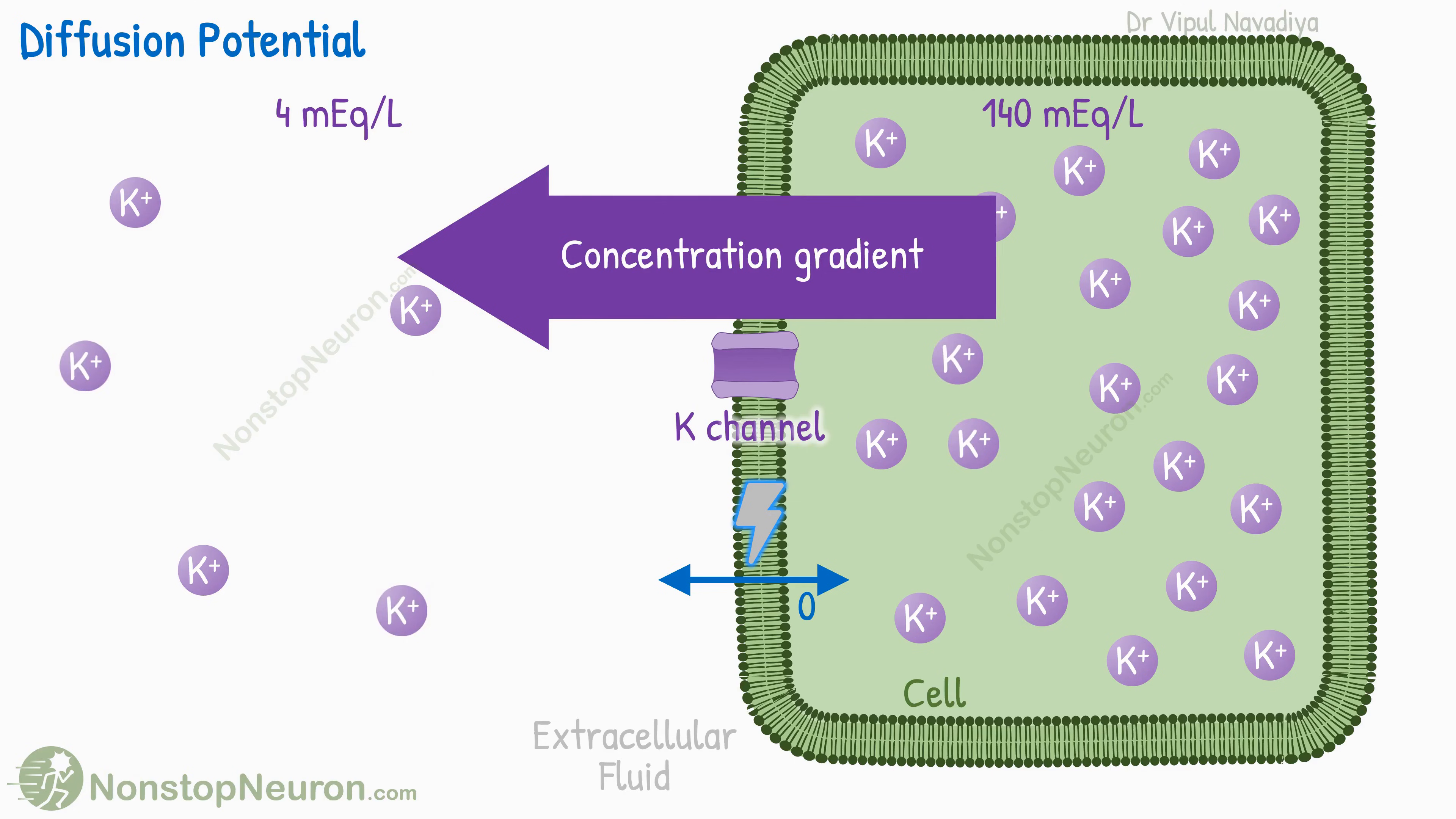As they do so, they carry their positive charge with them. So, now the outside of the cell becomes positive and the inside of the cell becomes negative. This positivity outside the cell tends to repel the positively charged potassium back into the cell. And the negativity inside the cell tends to keep the potassium inside.